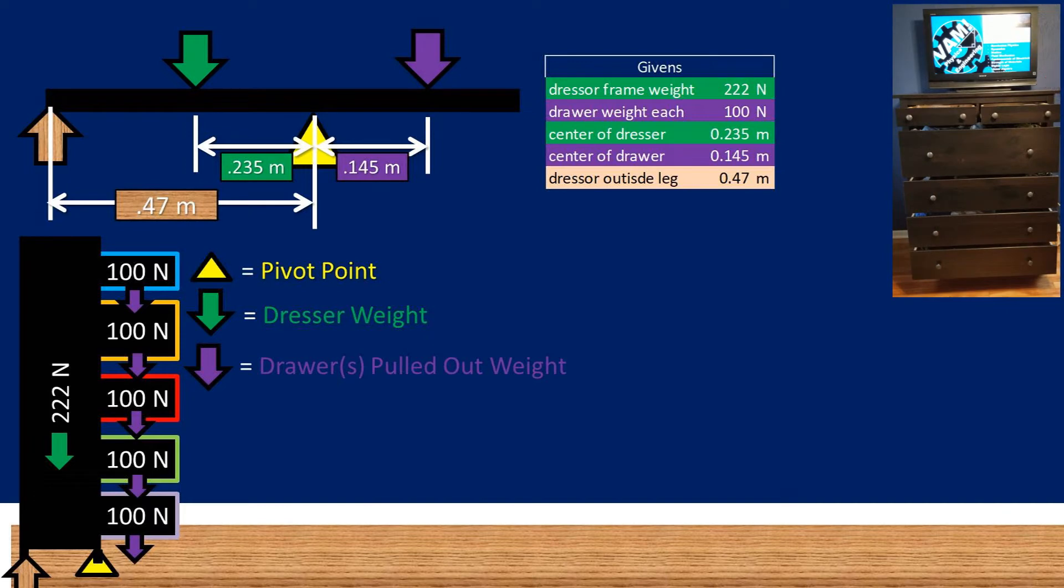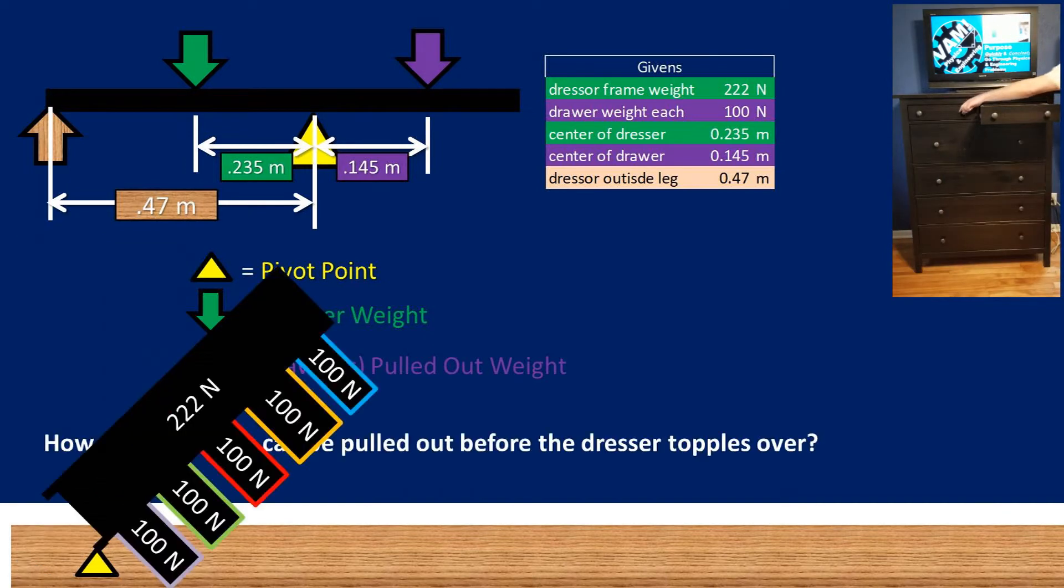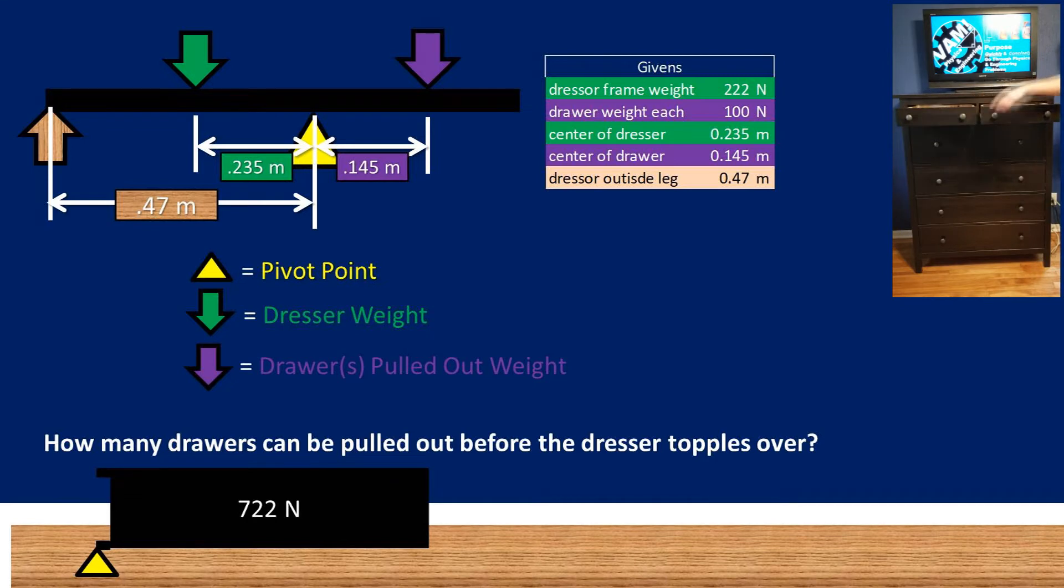Now let's work with what we are given to find out how many drawers we can pull out before the dresser topples over. You might want to pause here and try to work it out for yourself.